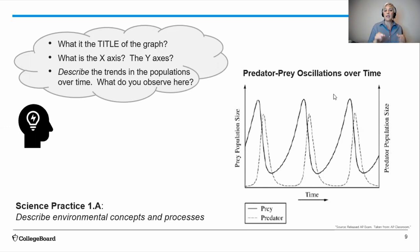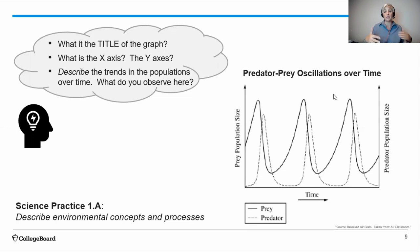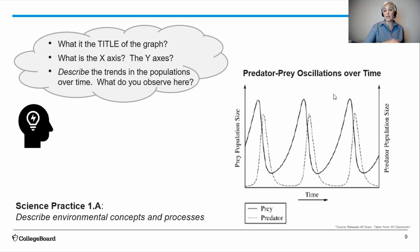Once we've looked at the title, let's take a look at the x-axis and the y-axes — there are two y-axes here. Time is across the bottom on the x-axis, moving linearly from left to right without specific hash marks or years. Our two y-axes show prey population size — represented by the solid line — and predator population size — represented by the dashed line. So we're comparing prey and predator population sizes across a time period.